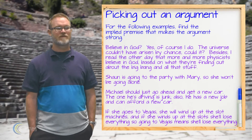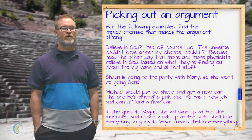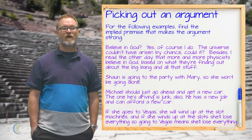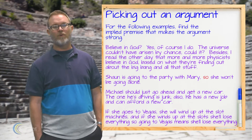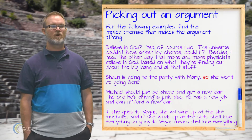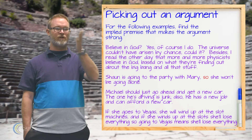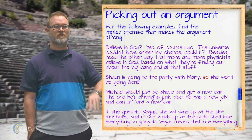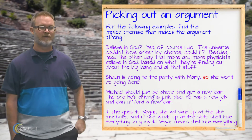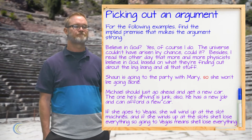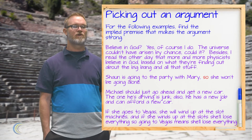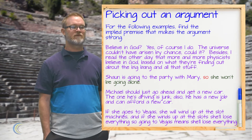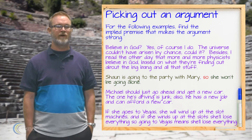Next example: Sean is going to the party with Mary, so she won't be going alone. The indicator word here is 'so,' which tells us that what follows is the conclusion and what comes before is the reason. Our conclusion is that she won't be going alone, and our premise is that Sean is going to the party with Mary.